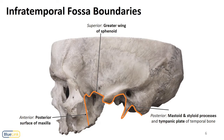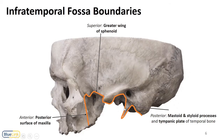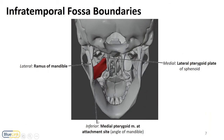The infratemporal fossa is a little less straightforward, so let's talk through its boundaries. Posterior to the maxilla is the first boundary. Superiorly is the greater wing of the sphenoid bone. Posteriorly we see the styloid process, the mastoid process, and the tympanic plate of the temporal bone. In terms of medial to lateral, it is bounded laterally by the ramus of the mandible and medially by the lateral pterygoid plate.